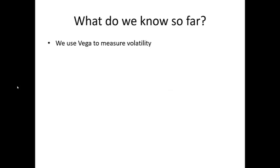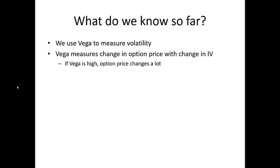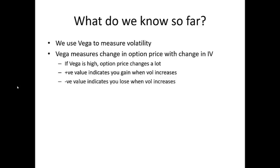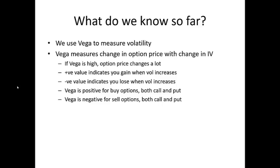We use vega to measure volatility. Vega measures the change in option price with change in IV. If vega is high, option price changes quite a lot; if vega is low, option prices don't change much. A positive vega means you gain when volatility increases; a negative value means you lose when volatility increases. Vega is positive for bought options (both call and put) and negative for sold options. Vega is very high for at-the-money options and low for deep in-the-money or out-of-the-money options.